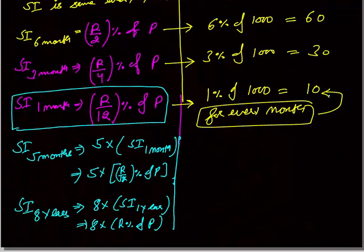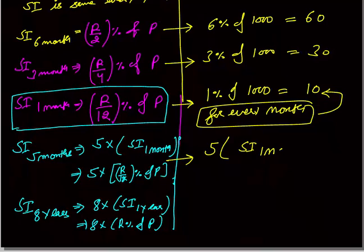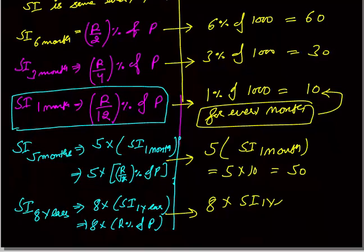For five months: SI = 5 × SI of one month = 5 × 10 = Rs. 50, because simple interest for every month is Rs. 10. For eight years: SI = 8 × SI of one year = 8 × 120 = Rs. 960.